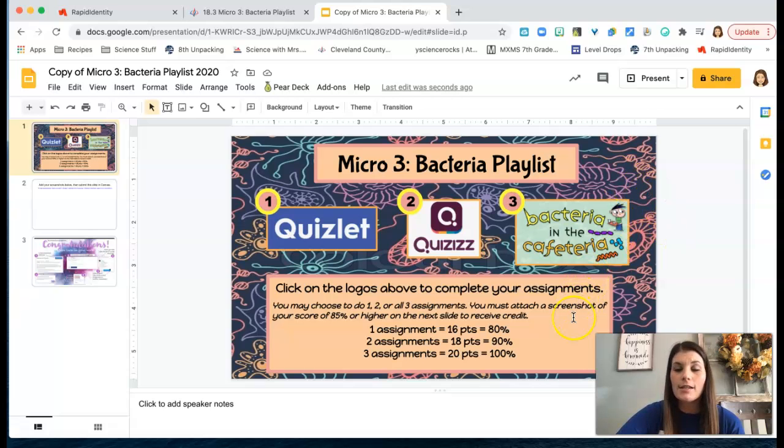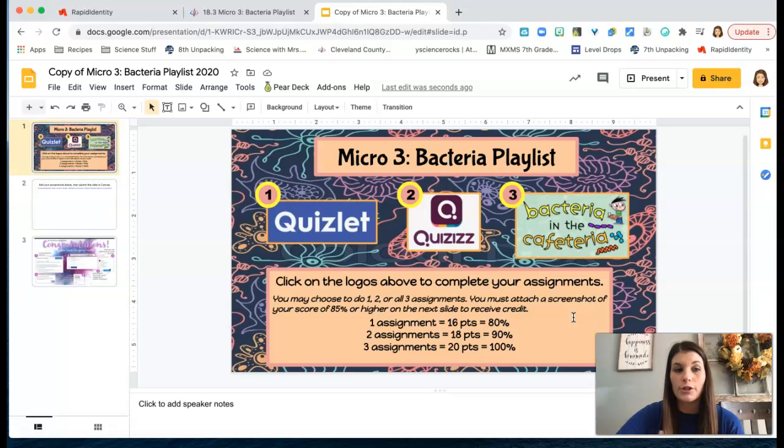Again this is kind of a choose your own adventure playlist. So if you only have time or only want to complete one of these assignments you could do just the Quizlet or one of the other assignments, submit your screenshot and get an 80%. If you choose to do two of the assignments you will get a 90%. If you choose to do all three and you include a screenshot on the second slide you will get a 100% for this activity.